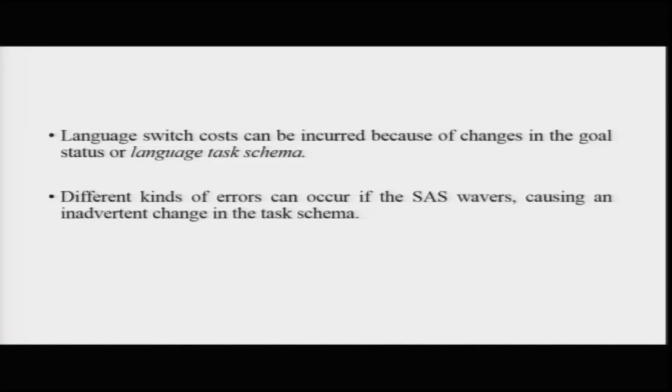There will be a language system containing the lemma and lexeme level representations from both languages. Language switch costs in this model can be incurred because of changes in the goal status or the language task schema. The language task schema will be performing in a particular mode when naming in L1, and it will have to shift its mode when going from L1 naming to L2 naming. This change in goal status might be held responsible for the switching costs people experience. Different kinds of errors can occur if the supervisory attentional system is not performing optimally, causing sometimes an inadvertent change in the task schema — for example, if your attention wavers or you are not conscious of the contextual cues.